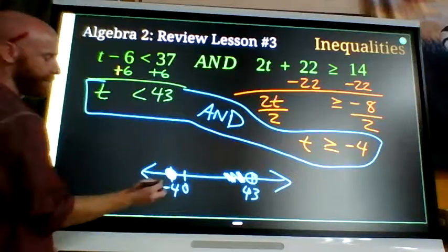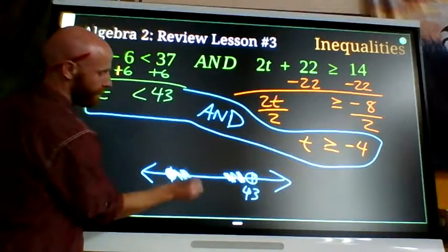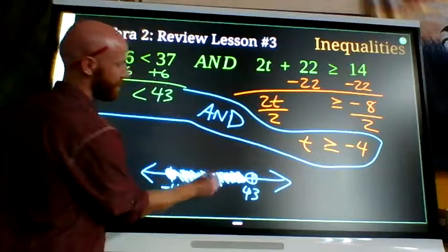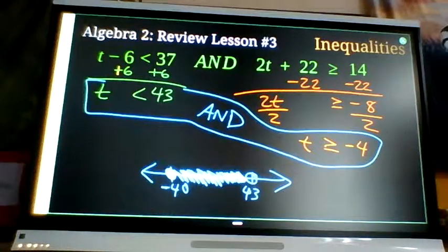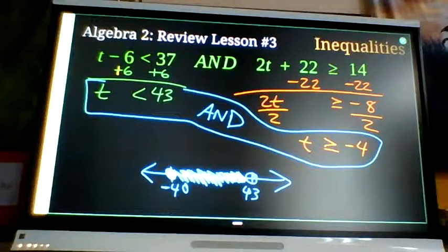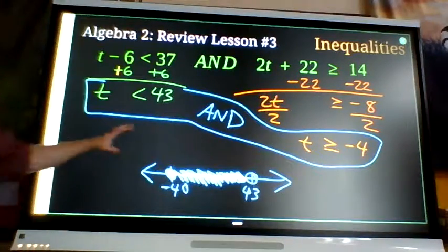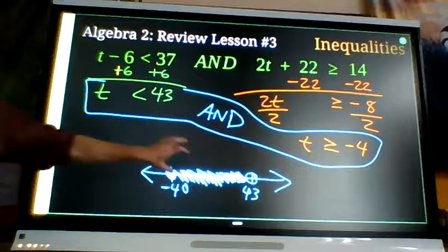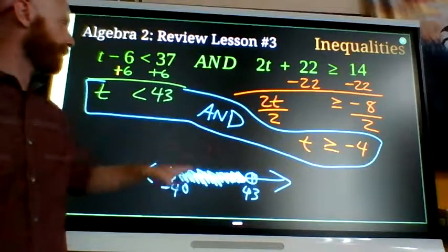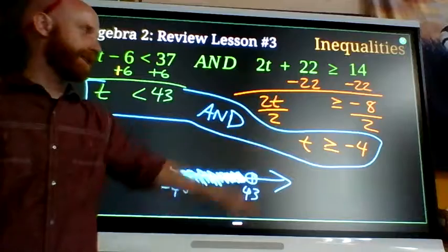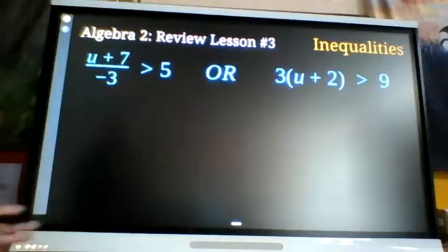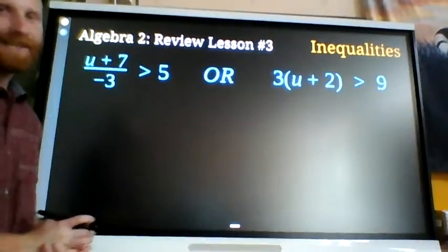So shade at negative 4, shade upwards. And this is a compound inequality. It's allowed to be anything between there, it's not allowed to be outside of there. Those are the numbers that fulfill both of these requirements. They are smaller than 43 and they're bigger than negative 4. The other kind of compound inequality that you could have to deal with is an OR inequality.